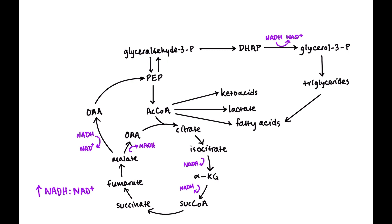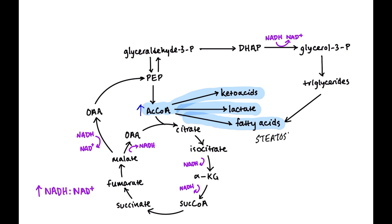When a person drinks heavily, the TCA cycle is ground to a halt and acetyl-CoA builds up. Because acetyl-CoA cannot enter the TCA cycle, it goes into making ketoacids, lactate, and fatty acids. That means you get steatosis of the liver, and a non-anion gap metabolic acidosis from the buildup of ketoacids and lactate.